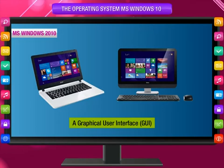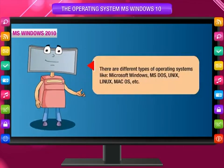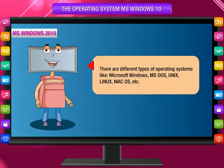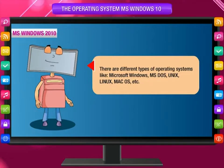A graphical user interface or GUI offers graphical icons and visual indicators, and actions are usually performed through direct manipulation of the graphical elements. There are different types of operating systems like Microsoft Windows, MS-DOS, UNIX, Linux, macOS, etc.